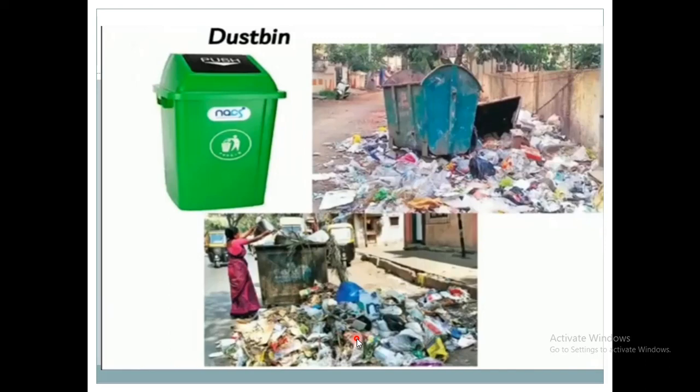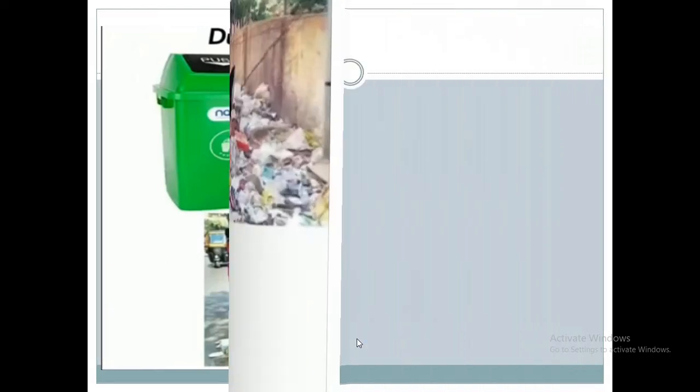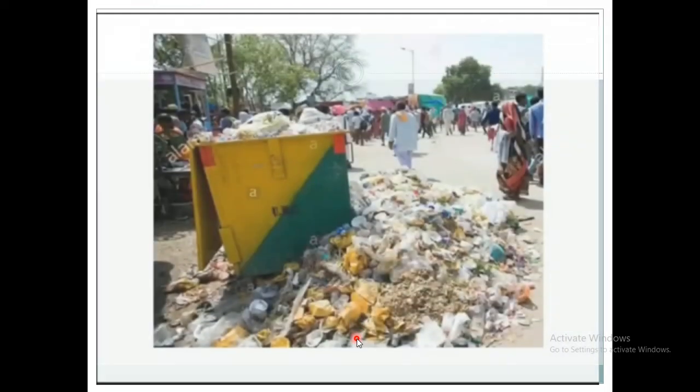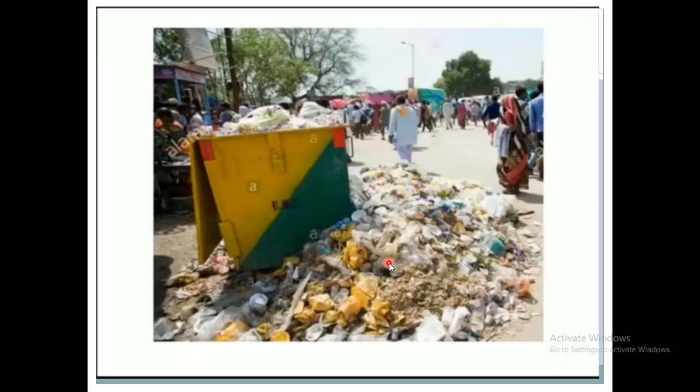Cockroaches and other insects will live comfortably there. It will be a breeding place for mosquitoes, and they will live there and spread disease. People do not put their waste properly in the dustbin, and because of that it leads to the arrival of many insects, cockroaches, and rats on the waste, which will spread a lot of disease.